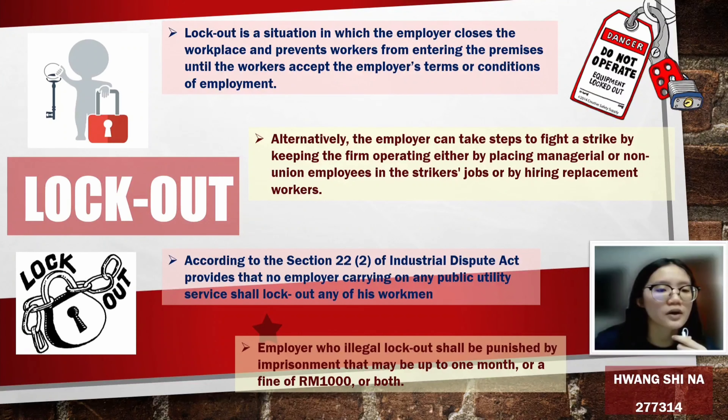The last condition is during the pendency of any conciliation proceedings before a conciliation officer and seven days after the conclusion of such proceedings. Under Section 26.2 of the Industrial Relations Act, the penalty for illegal lockouts is defined: employers who carry out illegal lockouts shall be punished by imprisonment of up to one month, or a fine of 1,000 ringgit or above. That's all, thank you.